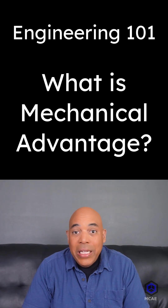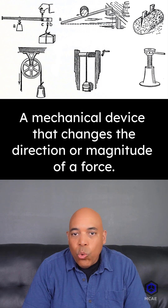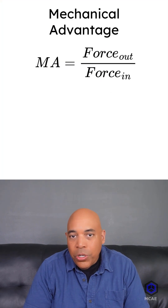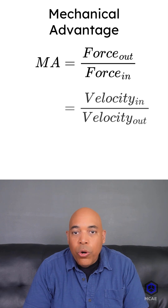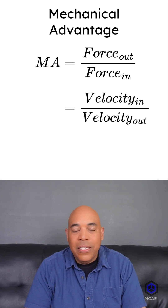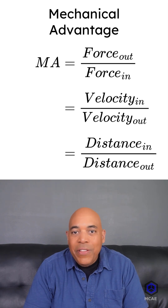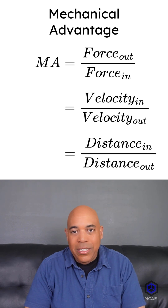You can calculate the mechanical advantage of machines, which is the ratio of the output force to the input force, or the ratio of the input velocity to the output velocity, or the ratio of the input distance to the output distance.